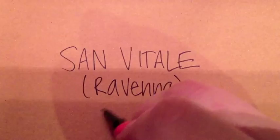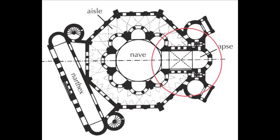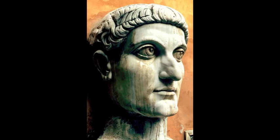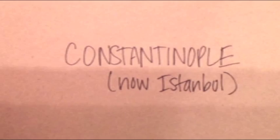Justinian and his attendants is a mosaic found in the apse of the Church of San Vitale, located in the northern Italian city of Ravenna. The capital of the Byzantine Empire at this time, established by the late Roman Emperor Constantine the Great, was Constantinople, now known as the Turkish city of Istanbul.